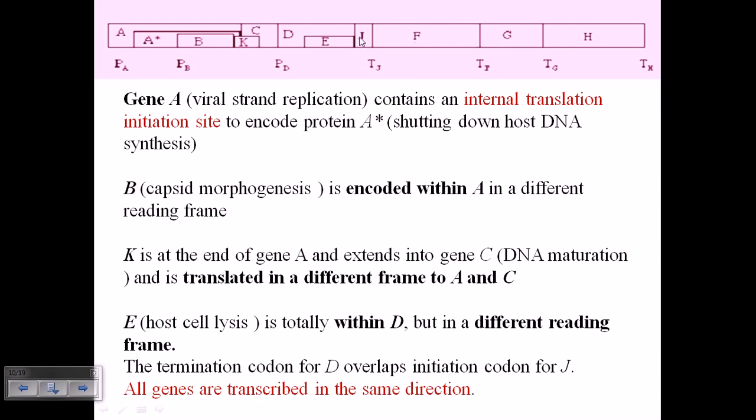Except for the structural genes, the rest of the genes are kind of overlapped. So gene A* is overlapped within gene A, B is overlapped within A, then K is overlapped within C, and E is overlapped within D. So you can see this overlapping sequence is going on throughout the place except for the structural gene regions.